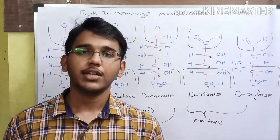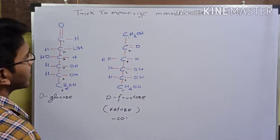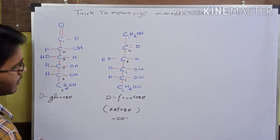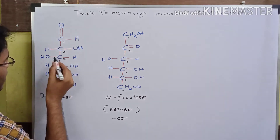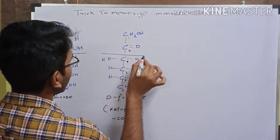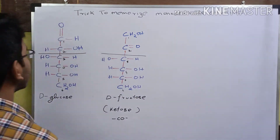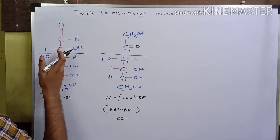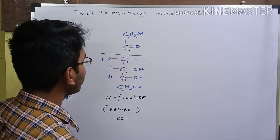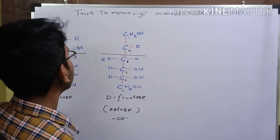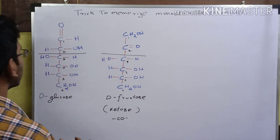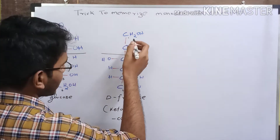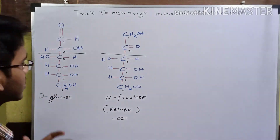Now let us move on to the structure of the ketose, which is fructose. Let us see how to memorize the structure of fructose based on the structure of glucose. The similarity between these two molecules is that up to the 3rd carbon atom, the structure is the same in both. Only after the 3rd carbon atom is the difference present. In glucose, the 2nd carbon atom contains the hydroxyl group on the right and hydrogen on the left, but in fructose the ketone functional group is present there. Also, at the first carbon atom, glucose has the aldehyde functional group, while fructose has an alcohol group.